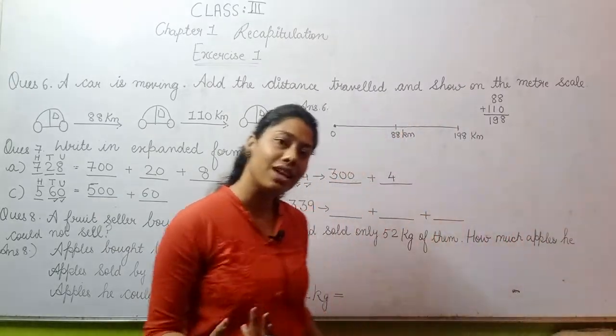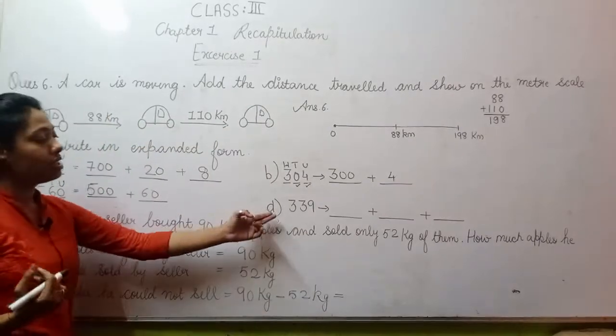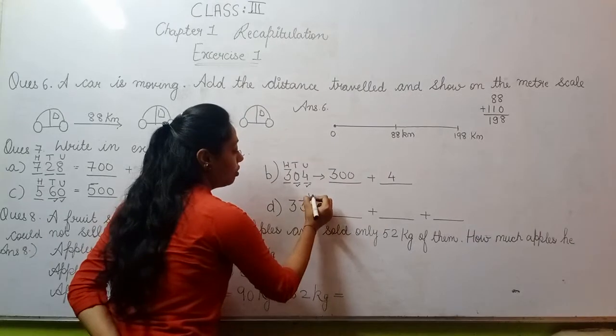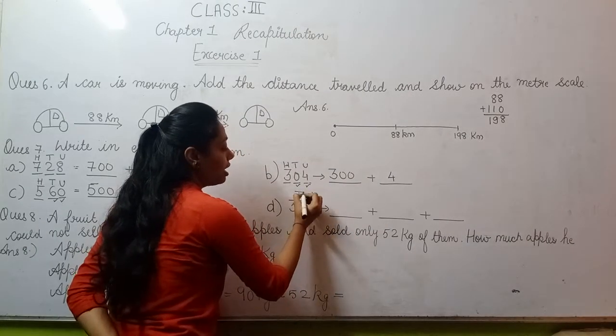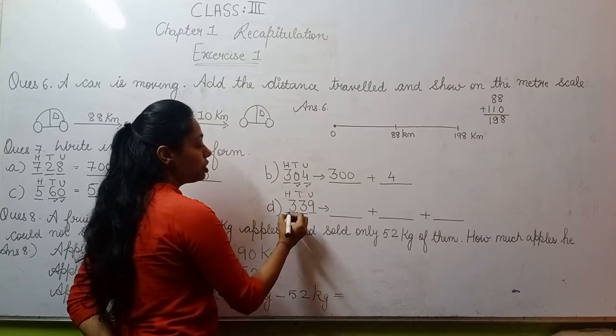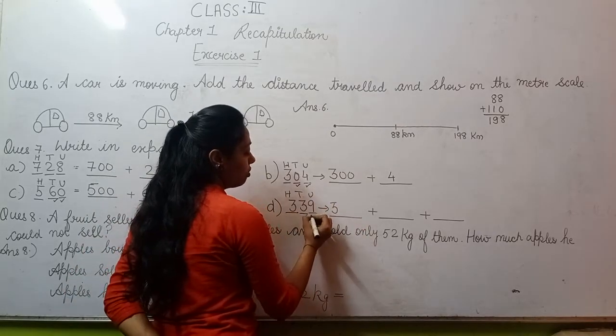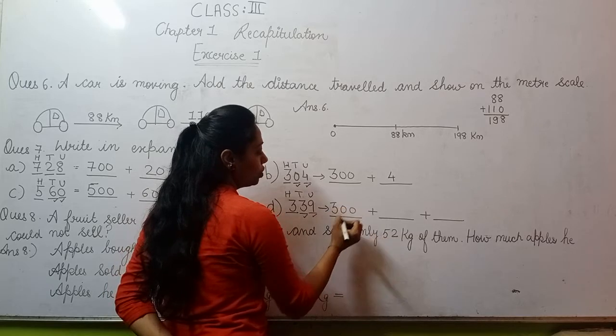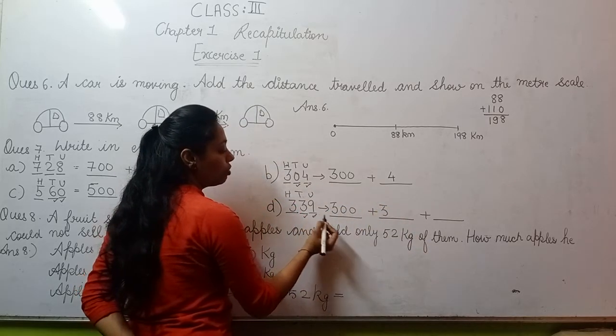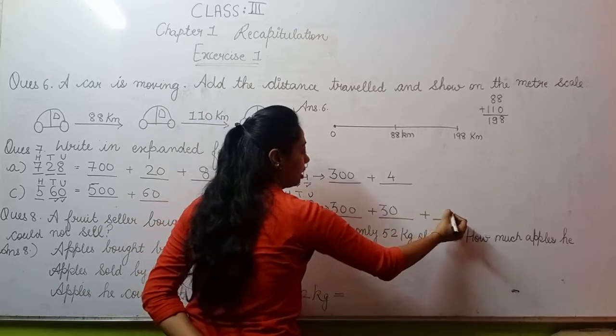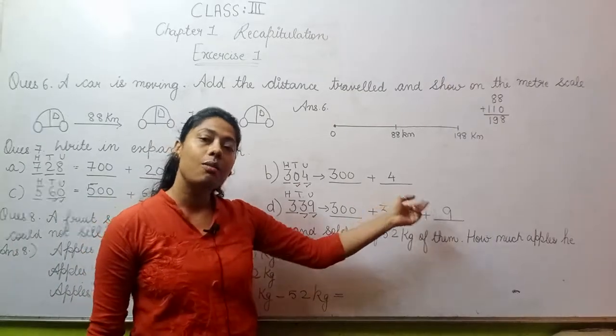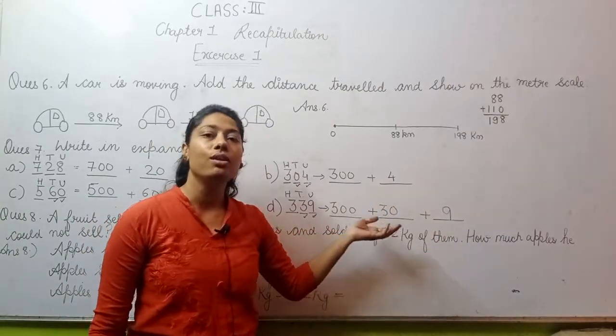Moving to D part. D part says 339. Again here is units place, here is tens place, and this is your hundreds place. When you write hundreds place, 3 with two zeros counted - 2 digits means 2 zeros. Then here you write 3, again count so 1 zero. And 9 is singular. So 300 plus 30 plus 9, this is the value of your D part of question number 7.